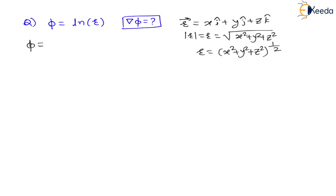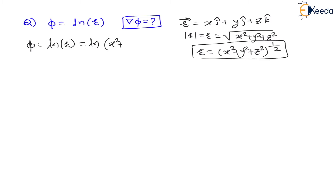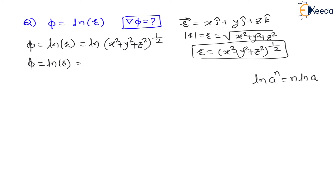So let us find this scalar function φ, which is nothing but ln(r). Let us substitute the value of r. Therefore φ = ln((x² + y² + z²)^(1/2)). Now we have a log property: ln(a^n) = n·ln(a). Applying this property, the exponent 1/2 comes outside, so φ = (1/2)·ln(x² + y² + z²).